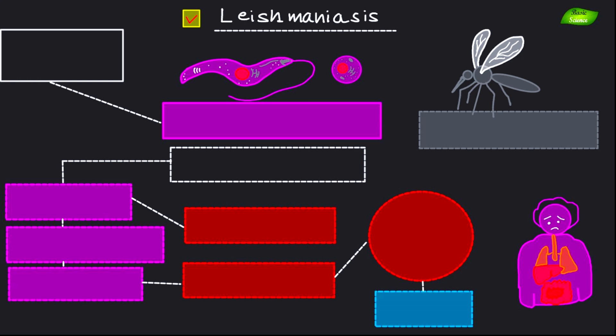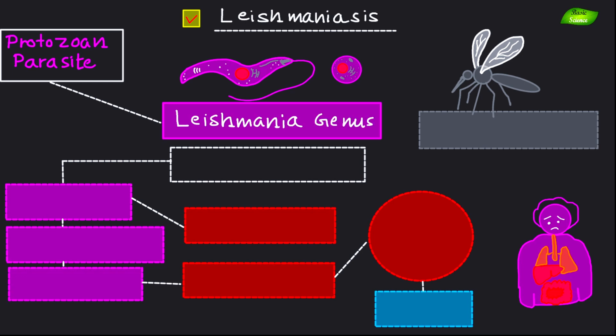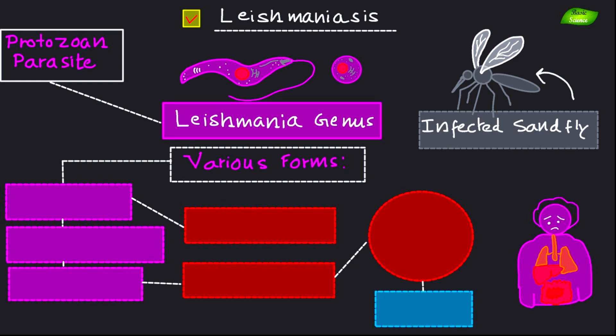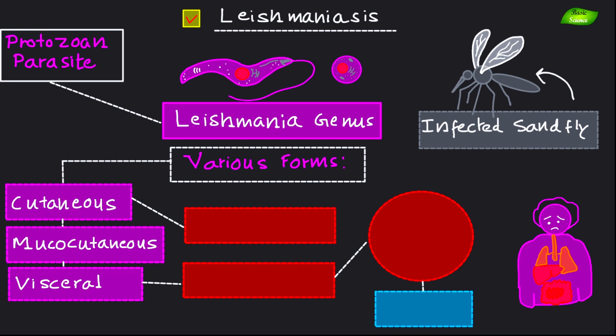Now let's move on to leishmaniasis. As the name indicates, it is caused by a protozoan parasite belonging to the genus Leishmania. It is transmitted through the bite of infected sandflies, which serve as the vector for this disease. The disease manifests in various forms including cutaneous, mucocutaneous, and visceral leishmaniasis.